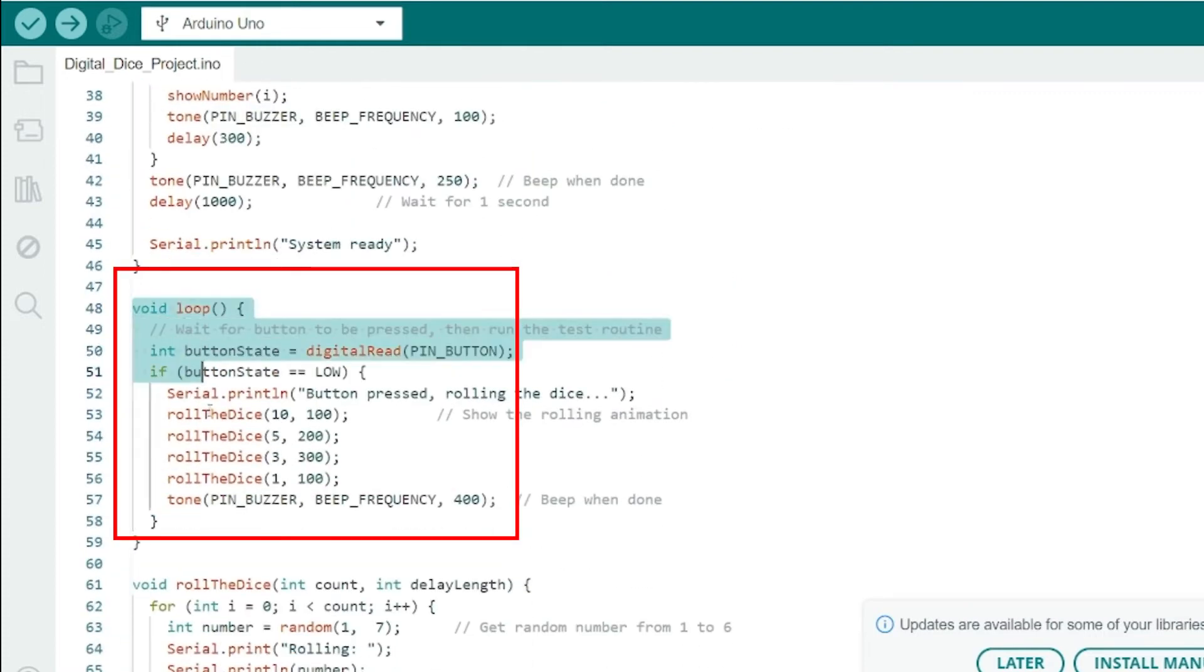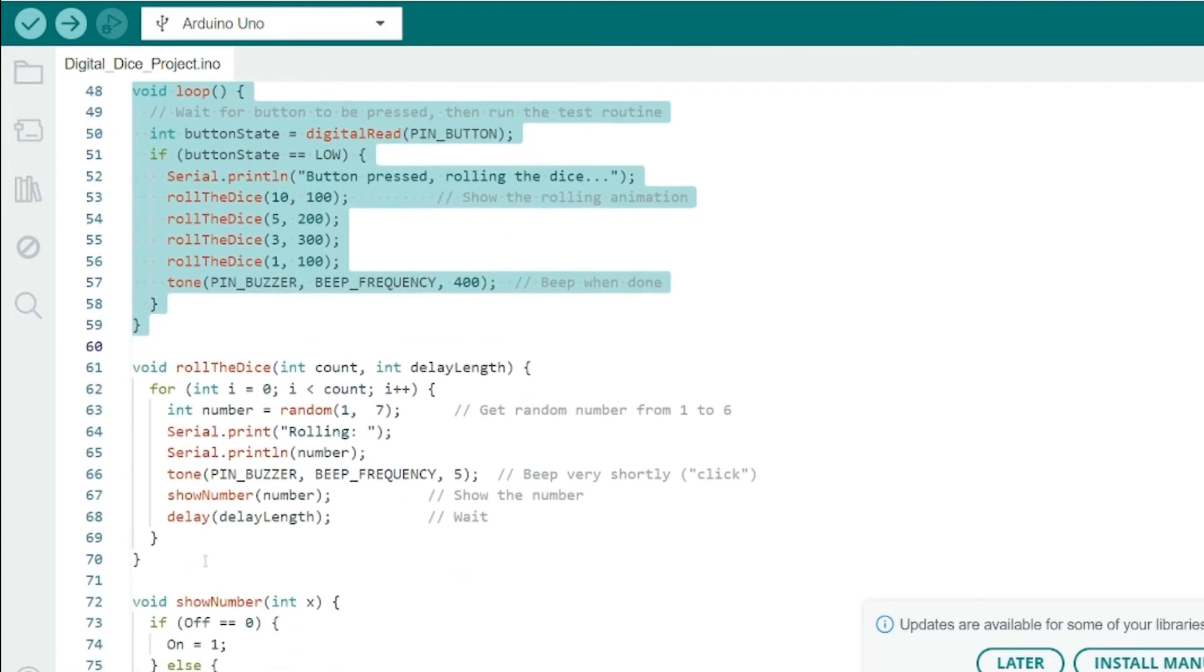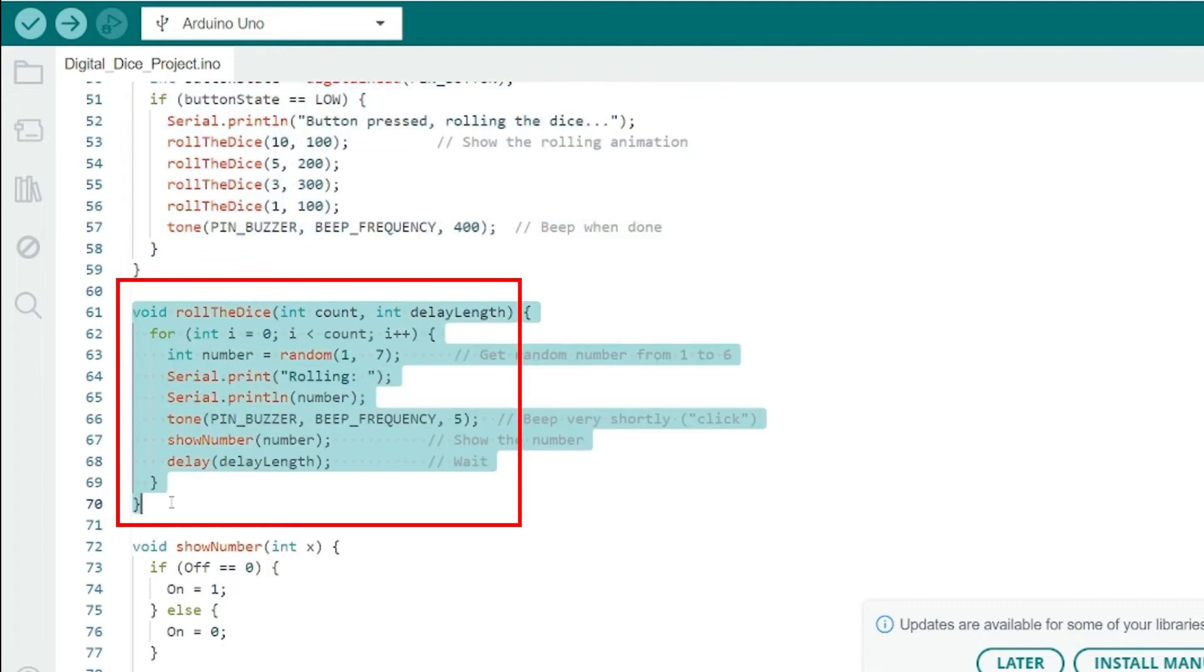In the loop function we continuously check if the button is pressed. If it is, we call the roll the dice function to simulate the dice rolling.